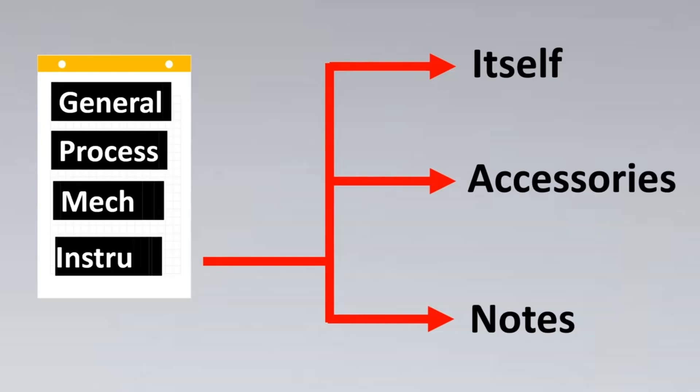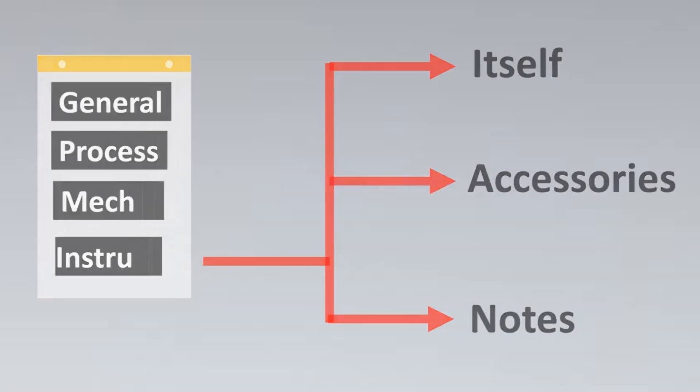Now what is the part related to the instrument? We'll try to break it into three parts: the instrument itself, its accessories, and the notes section. For the first part, what is the part of the instrument itself?